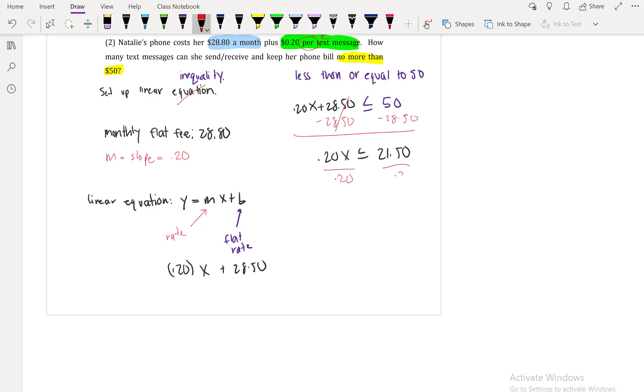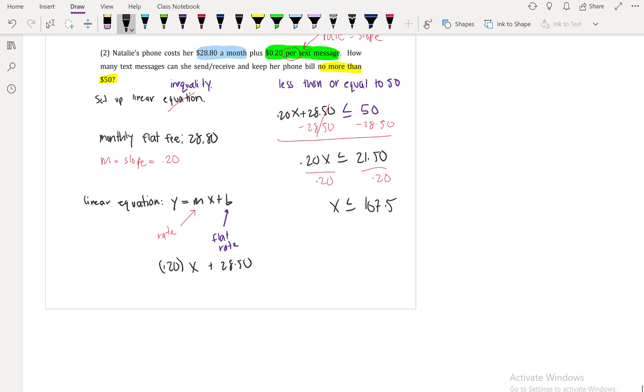And from there, you're going to divide by .20 to get the x by itself. So you get 107.5. So how many text messages can she send and receive and keep her bill less than or equal to $50? Well, she can send a total of 107 text messages. And so that is going to be your final answer. You can't really send half a text. So you just round it to 107. That's the most that she can send.